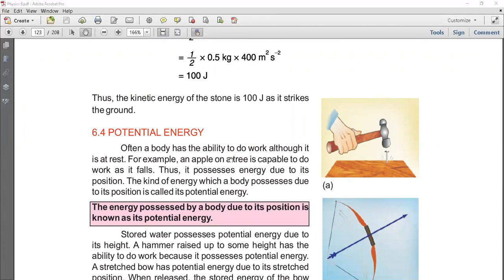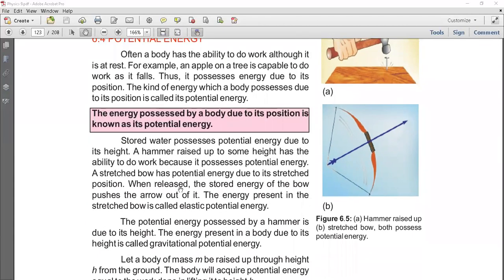Now let's talk about potential energy. The energy possessed by a body due to its position is called potential energy. For example, an apple on a tree is capable to do work as it falls. As it goes down, the force causes displacement, so it has potential energy. Examples include a hammer and a stretched bow.